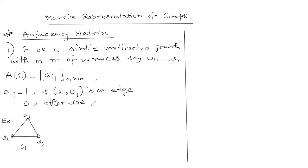Welcome back to another video on graph theory. Previously we have done the pictorial representations of graphs. Now to analyze large graphs, there are alternative representations available. Here I'll describe how to represent a graph using matrices. There are different kinds of matrix representations available. Here I'll concentrate on adjacency matrix and incidence matrix of a graph. So let us start with adjacency matrix.